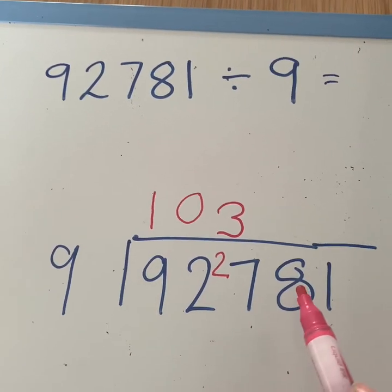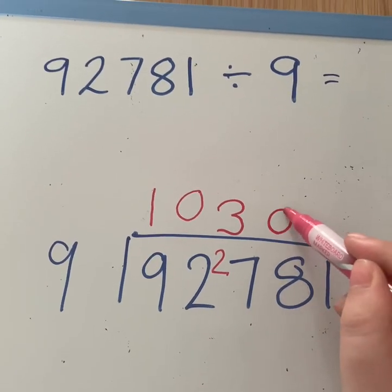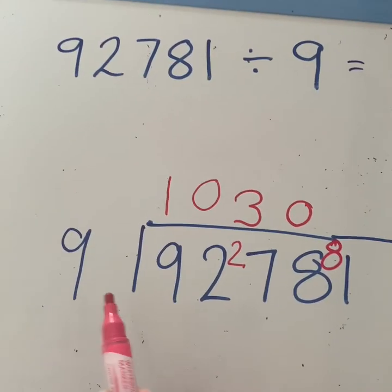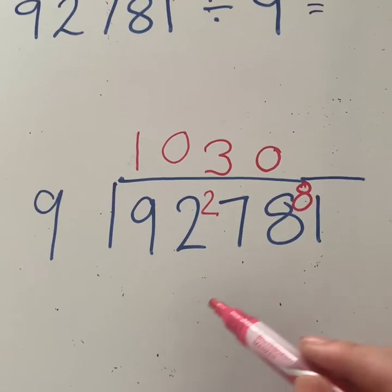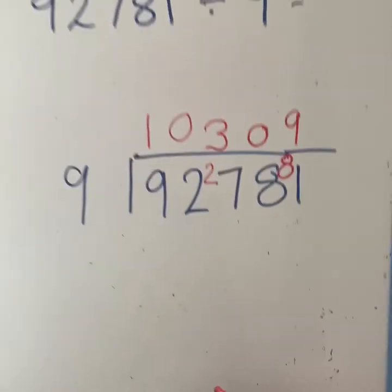If we continue over here. How many 9s go into 8? None. 8 is smaller. So we're going to put a 0. But we're going to carry our 8 over. How many 9s go into 81? If we count up in our 9 times tables again, 9 times 9 is 81. And that goes in exactly.